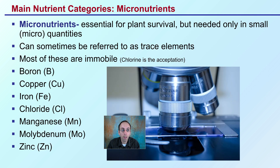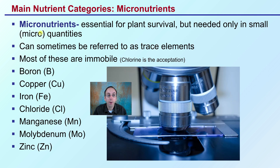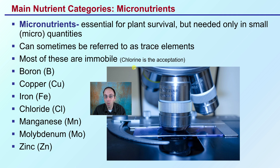That leads us to micronutrients. Micronutrients are essential for plant survival, but they're only needed in small, micro quantities. They can sometimes be referred to as trace elements. These are immobile, except chlorine, which is the only exception. The micronutrients include boron, copper, iron, and chloride.